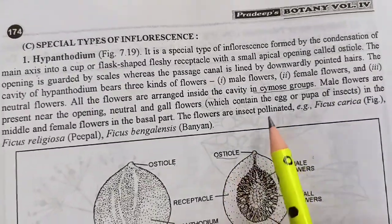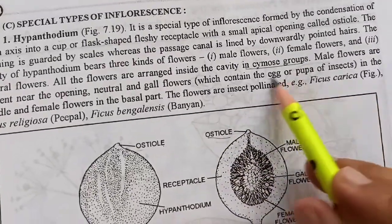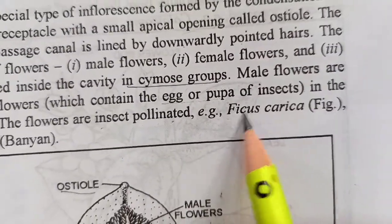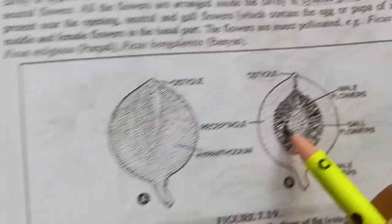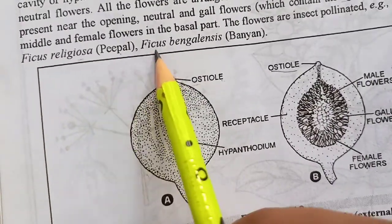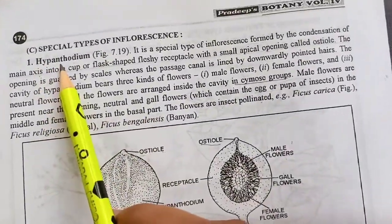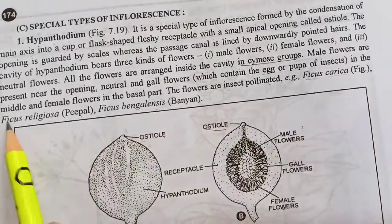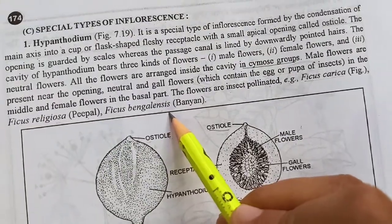Yahan pe jo pollination hai, woh insect pollination hai, kyunki jo gall flowers hain they contain the egg or pupa of insects. Examples hain Ficus carica which is fig, Ficus religiosa which is peepal, and Ficus benghalensis. So the example of hypanthodium type of inflorescence is Ficus carica, Ficus religiosa, Ficus benghalensis.